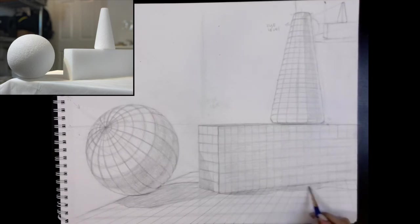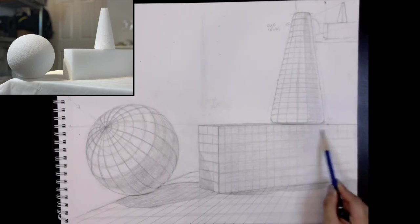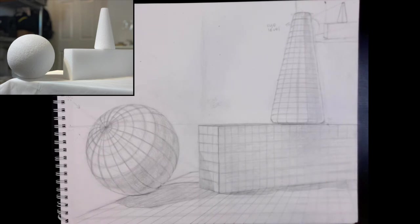The irregularity of the shape of the shadow from the rectangular prism is caused by the tablecloth which is underneath the forms.